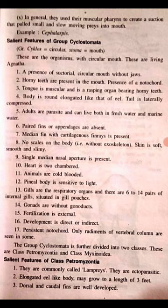The heart is two-chambered. Animals are cold-blooded. The pineal body is sensitive to light. Gills are the respiratory organs, and there are six to fourteen pairs of internal gills situated in gill pouches. Gonads are without gonaducts. Fertilization is external. Development is direct or indirect. A persistent notochord is present; only rudiments of vertebral columns are seen in some.